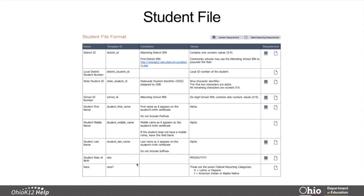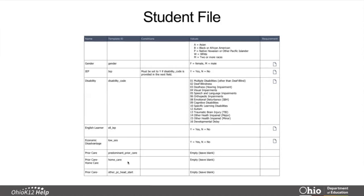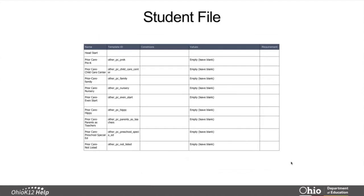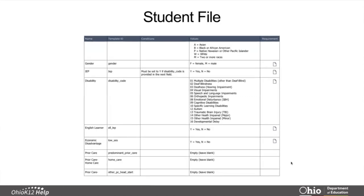I want to highlight date of birth. The format for that and the Student ID and the District IDs are very specific, and you'll need to make sure that those formats are correct when entering your information. Make sure that you enter the gender, the IEP, and the Disability Codes, as well as the EL Code and Economic Disadvantage Code. The remaining fields are not required, nor are they necessary in order to generate reports out of the K-Ready system. I just wanted to make sure that you understood what fields were recommended and required for the student file.